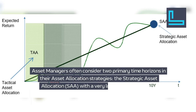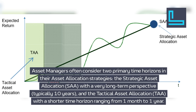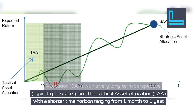Asset managers often consider two primary time horizons in their asset allocation strategies: the Strategic Asset Allocation (SAA), with a very long-term perspective, typically 10 years, and the Tactical Asset Allocation (TAA), with a shorter time horizon ranging from one month to one year.